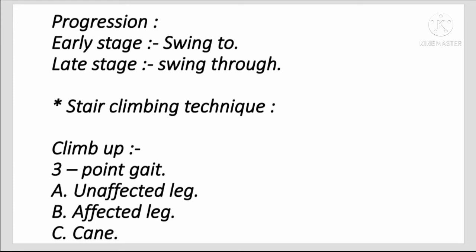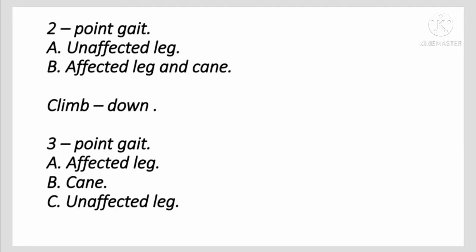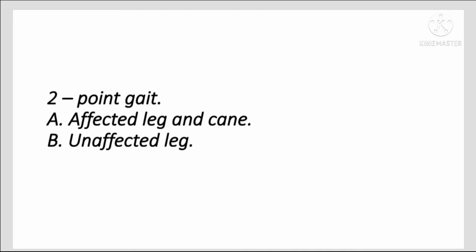Stair climbing technique for canes. Climb up — 3-Point Gait: first unaffected leg, then affected leg, then cane. 2-Point Gait: first unaffected leg, then affected leg and cane together. Climb down — 3-Point Gait: first affected leg, then cane, then unaffected leg. 2-Point Gait: affected leg and cane together, then unaffected leg.